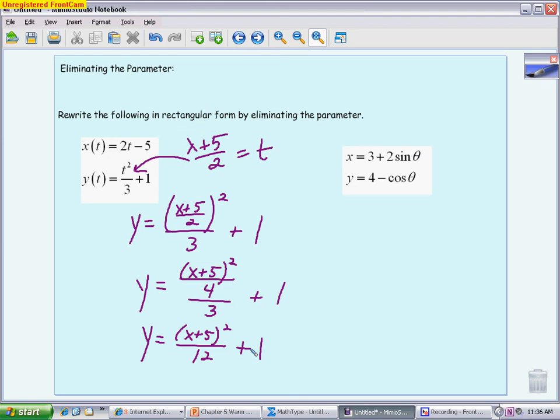If you are allowed to use a calculator on something like this, you can graph it. You can graph the original equations in parametric mode and take a look at it. You can graph your final answer in the rectangular, or the calculator calls it function mode, and you should see a very similar picture. Sometimes it gets a little distorted with the mode in the screen view, but you should still see the same general shape.